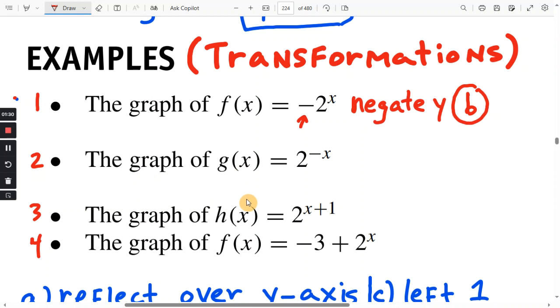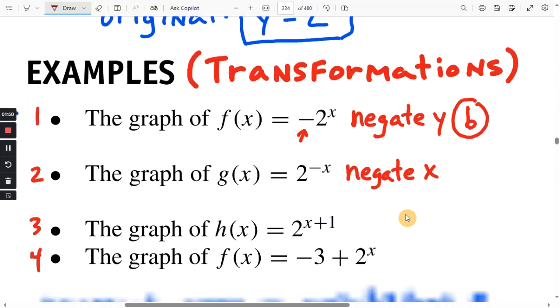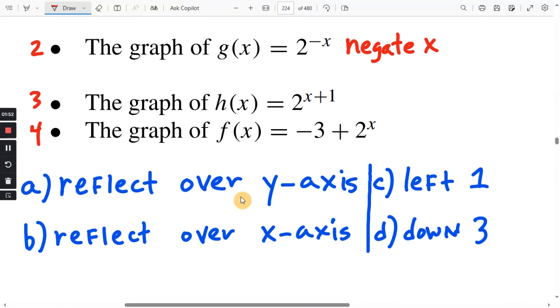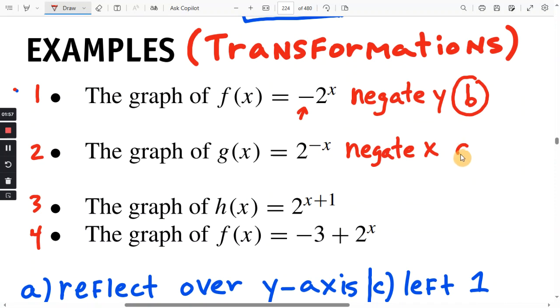Number two. We started with y equals 2 to the x, and now we have y equals 2 to the negative x. Okay, so we negated the x. In other words, we multiplied x by negative one. We changed the plus minus sign on x. When you negate the x, it reflects over the y-axis. It's reversed. So again, this is answer a.